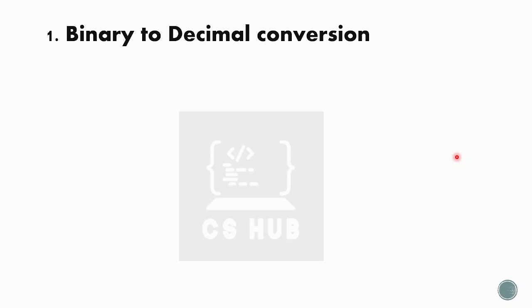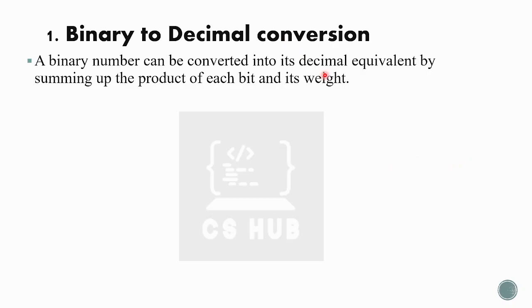Now, it is binary to decimal. We need to convert a binary number into a decimal number. We use the positional weight method. A binary number can be converted to its decimal equivalent by summing up the product of each bit and its weight. Multiply each bit by its weight and add the results.